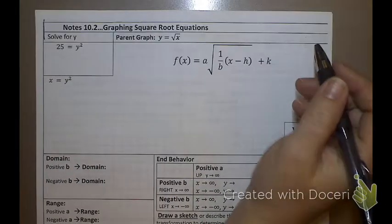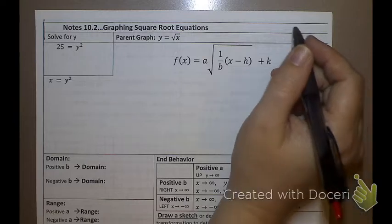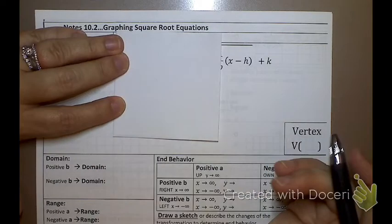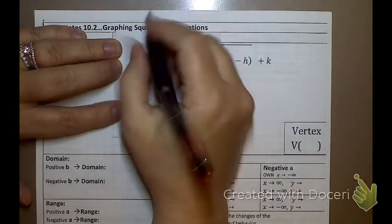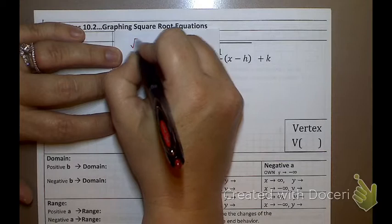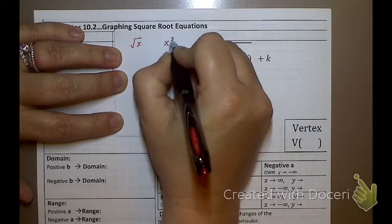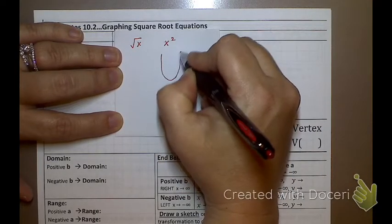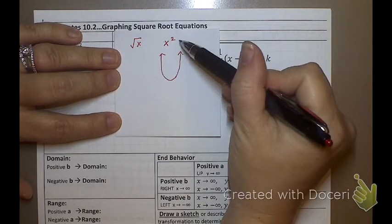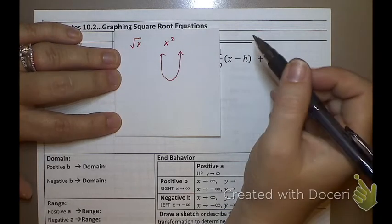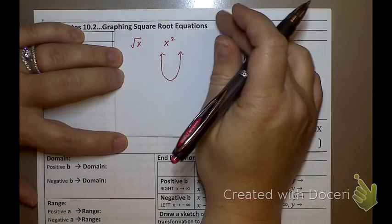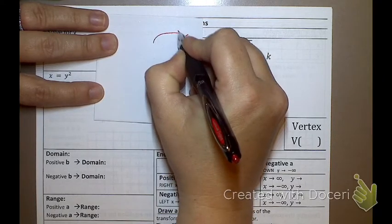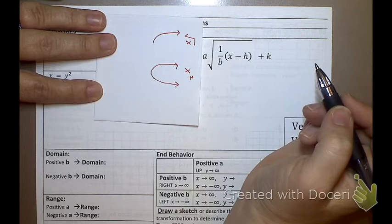Graphing square root equations. Let me get a little scratch piece of paper here. When we graph a square root equation, what is the opposite of a square root? A square! So the opposite of this is this. When we graph x squared, you end up with a parabola, right? One bend on a second degree equation. A square root is similar if we were to take our parabola and lay it on its side and only graph half of it. That's what a square root graph looks like.